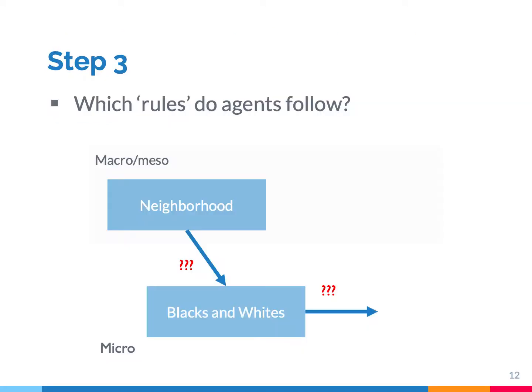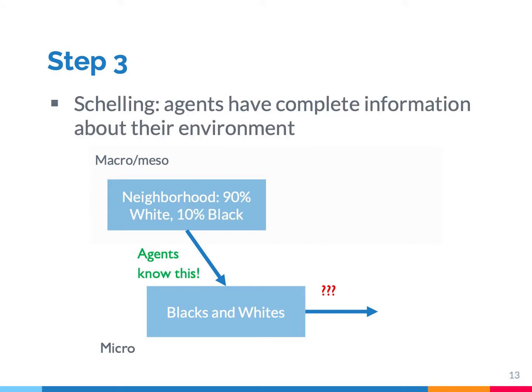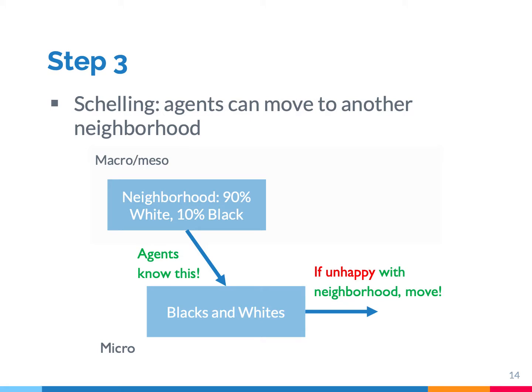In the third step, you can be more explicit about the preferences and behavior of the agents. These are so-called micro-rules. In the Schelling model, several micro-rules were specified. First, the model assumes that blacks and whites know about the racial composition of their neighborhood — if they live in a very segregated neighborhood, they would know that. And second, the model assumes that people move to another neighborhood if they are not happy with the racial composition of the neighborhood in which they live.